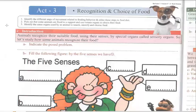Hello grade 7 students. I hope that you're doing great. We're going to continue talking about ways animals use to recognize their food. Last time we said that animals use their senses and their sensory organs to recognize their food.